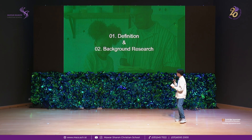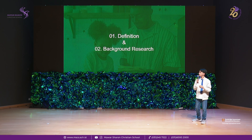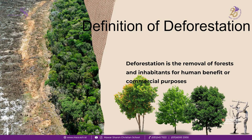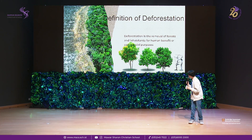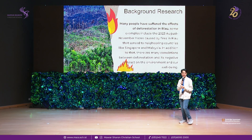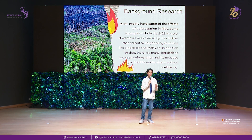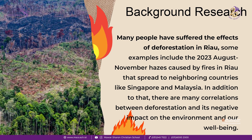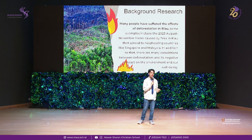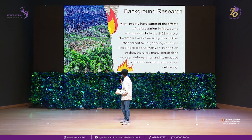The definition of deforestation is the removal of forests and the inhabitants of those forests for human benefit or commercial purposes. I picked Riau because the people there have already experienced the effects of deforestation. One example is the August to November 2023 fire hazes, which spread to neighboring countries like Singapore and Malaysia and caused tensions between those governments and the Indonesian government.